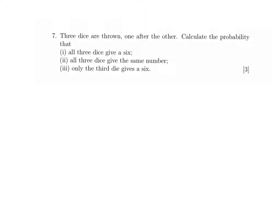First question, taken from the 2006 paper involving probability. Three dice are thrown one after the other. What I'm going to do is draw a probability tree diagram. So we've got the first dice, and I'm going to draw the branches in the probability tree diagram.